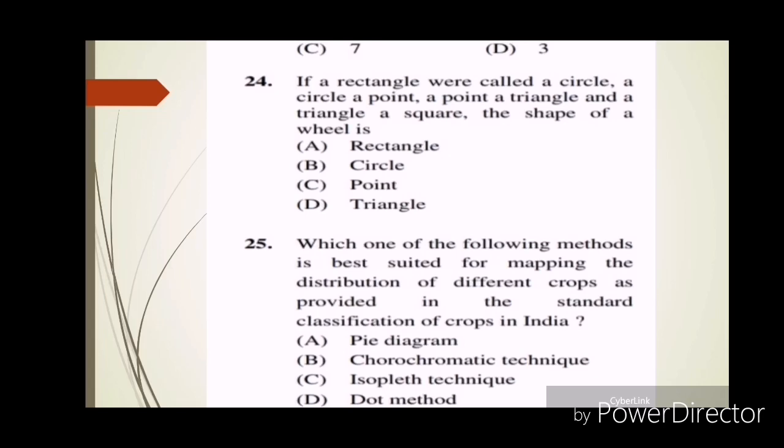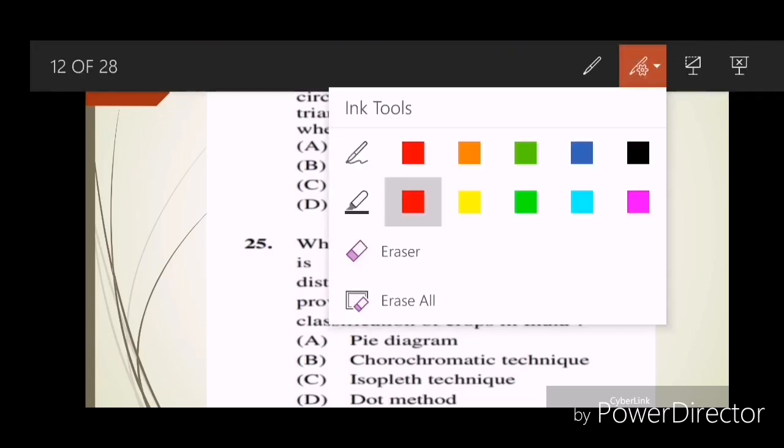Question twenty-four: If a rectangle were called a circle, a circle a point, a point a triangle and a triangle a square, the shape of a wheel is? Answer C, that is point.